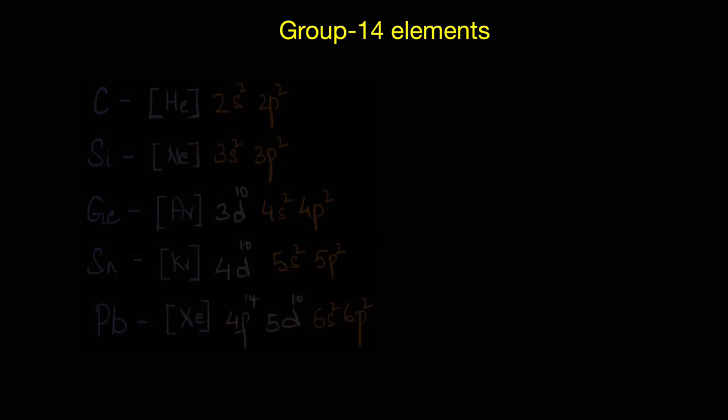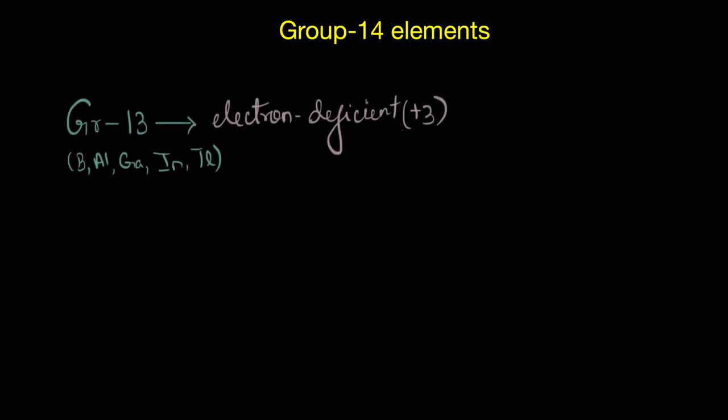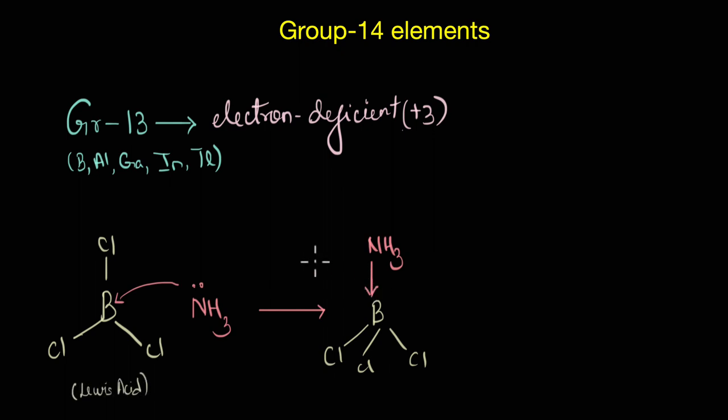From the previous videos we have seen that one of the characteristic features of the group 13 elements was that they were electron deficient in their trivalent state. Because they have incomplete octet, their compounds could act as Lewis acids by accepting electron pairs from electron rich species and forming complexes or adducts.